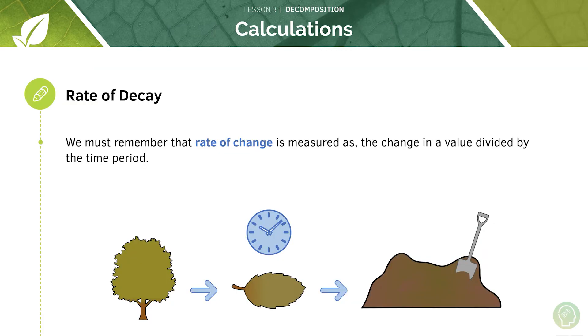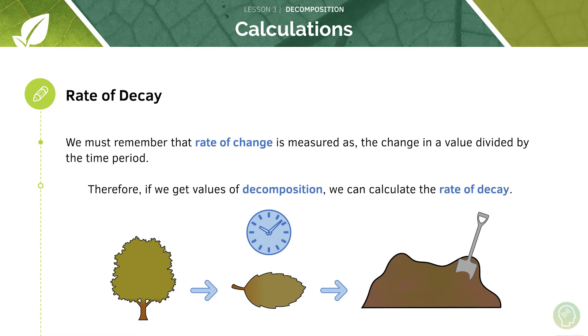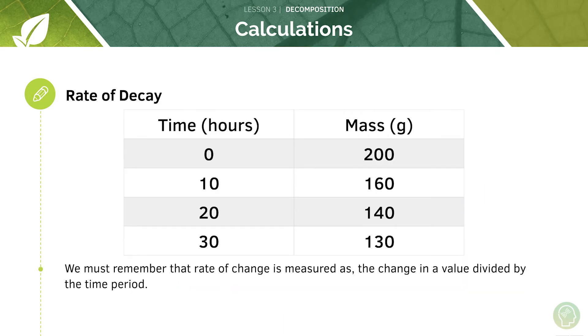Let's have a look at some simple calculations. The rate of decay, as with any rate of change, is just the change in a value divided by the time period. Therefore, if we get values of decomposition, we can calculate the rate of decay.